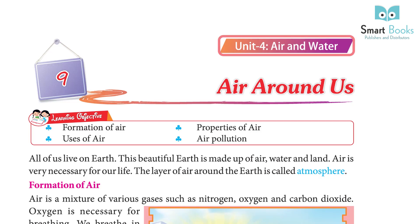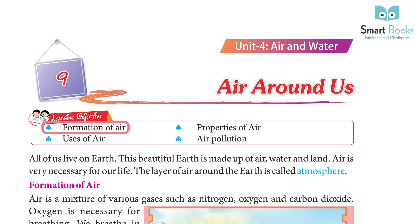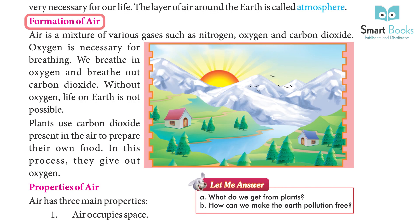Unit 4: Air and Water, Chapter 9: Air Around Us. Learning objectives include: formation of air, properties of air, uses of air, and air pollution. All of us live on Earth. This beautiful Earth is made up of air, water, and land. Air is very necessary for our life. The layer of air around the Earth is called the atmosphere.